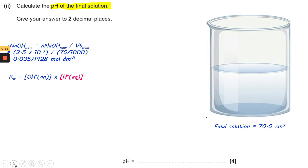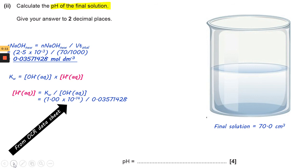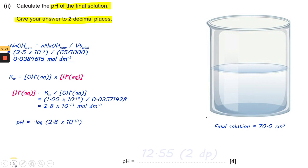So using Kw, you can isolate H+, and divide Kw by the concentration of sodium hydroxide, taking Kw from the datasheet. That gives you 2.8 times 10 to the minus 13, and that gives you 12.5 to 2 decimal places.